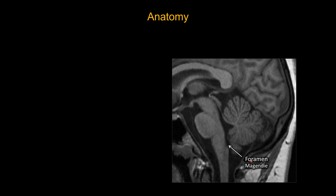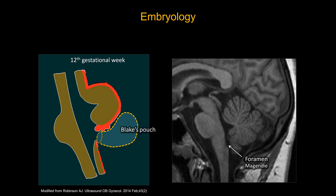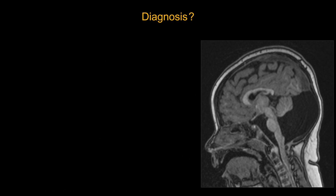Another thing of note is the foramen of Magendie, also known as the median aperture. Together with the foramina of Luschka, they serve as outlets for CSF to extend from the ventricular system out into the subarachnoid space. During formation of the subarachnoid space, there is an evagination of a pouch called Blake's pouch. Roughly around the 12th gestational week, Blake's pouch will start to fenestrate and eventually involute, forming the foramen of Magendie. If something goes wrong with this process, that can lead to certain types of cystic malformation.